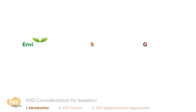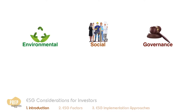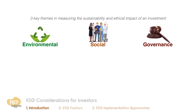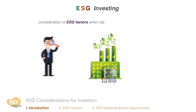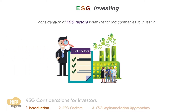ESG stands for environmental, social, and governance — these are the three key themes in measuring the sustainability and ethical impact of an investment in a company. We've discussed corporate governance in past lessons, so our focus in this lesson is on the environmental and social aspects.